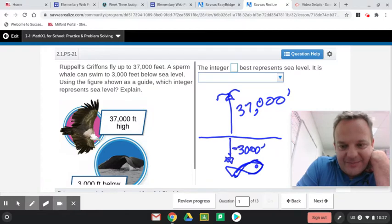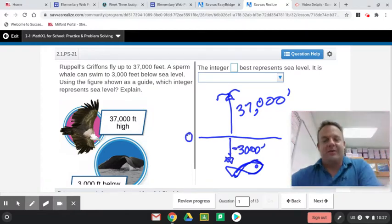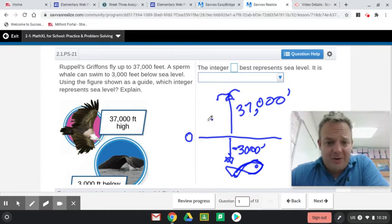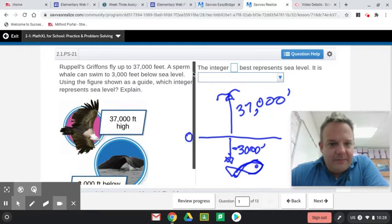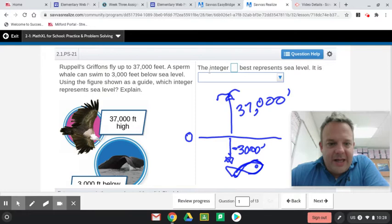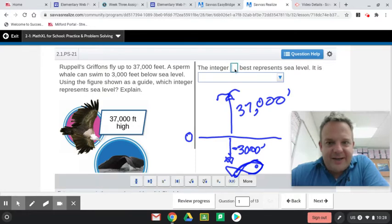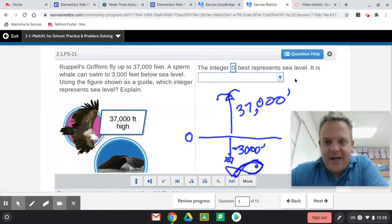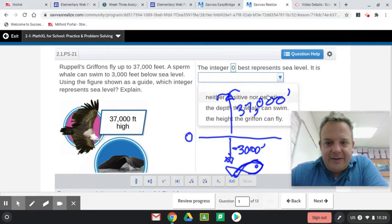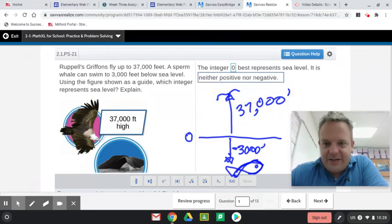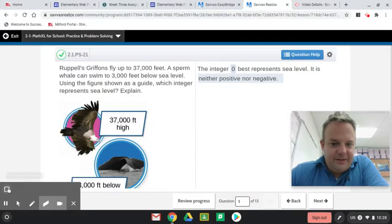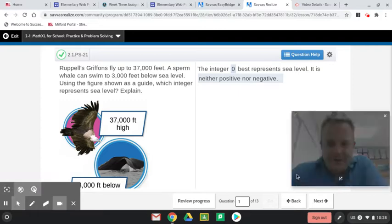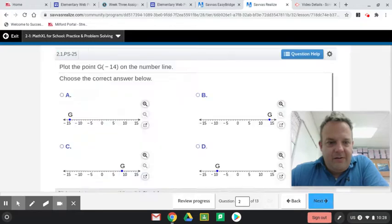what would sea level be? So this is negative 3,000. So sea level would actually be zero. So that's important throughout this whole process to know what zero represents. The integer blank best represents sea level. So what represents sea level? Zero. So zero represents sea level. It is neither positive nor negative.